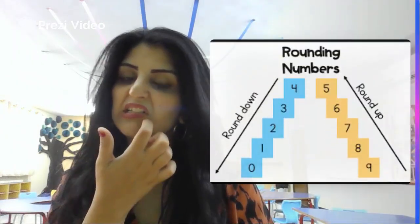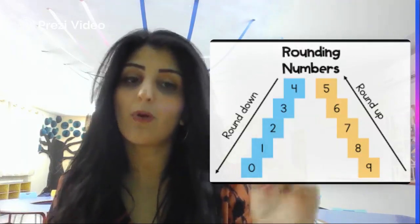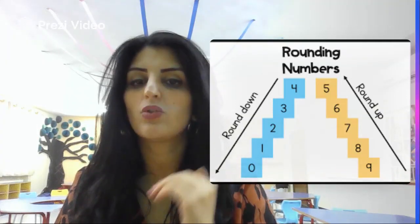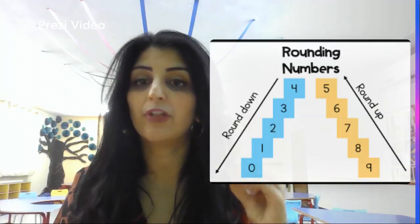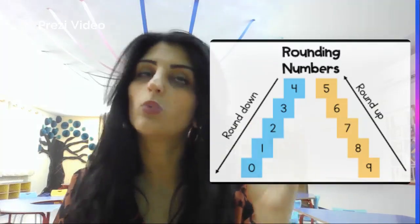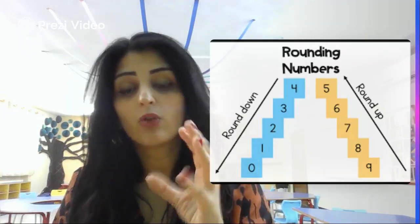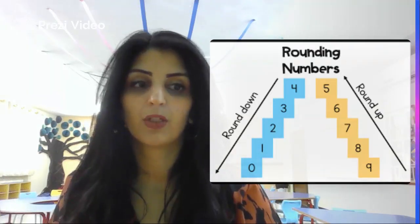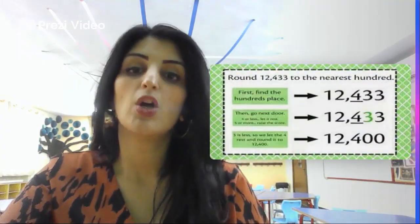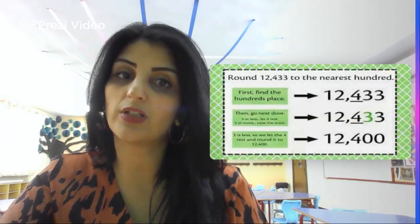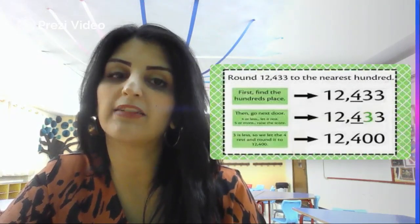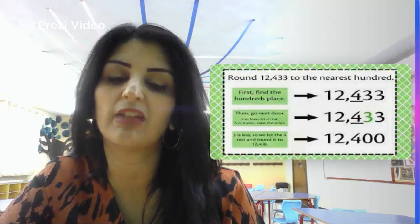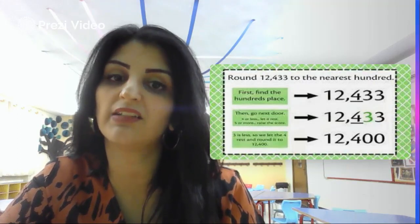The rule is: rounding up — five, six, seven, eight, nine. Round down, which means we keep it the same — four, three, two, one, zero. So: five through nine, I always round up the underlined digit; four through zero, I keep it the same. For example, round 12,433 to the nearest hundred. The underlined digit is four. I look ahead of it, which is three — four and below, so I keep it the same. It becomes 12,400.